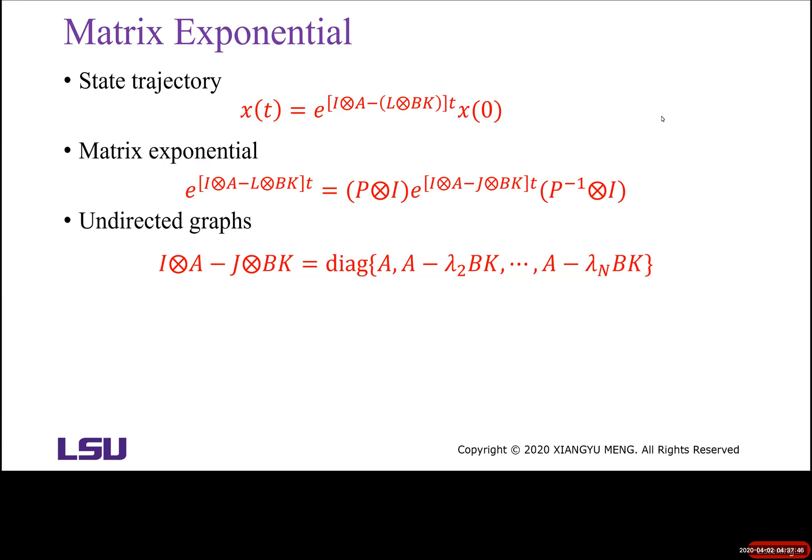In the last lecture, we know the state trajectory of all agents can be written in this form. So x(0) is the initial state of all agents, then times exponential identity matrix connect the A matrix minus connect BK, then we have the time t. Then x(t) determines the state trajectory of all agents.